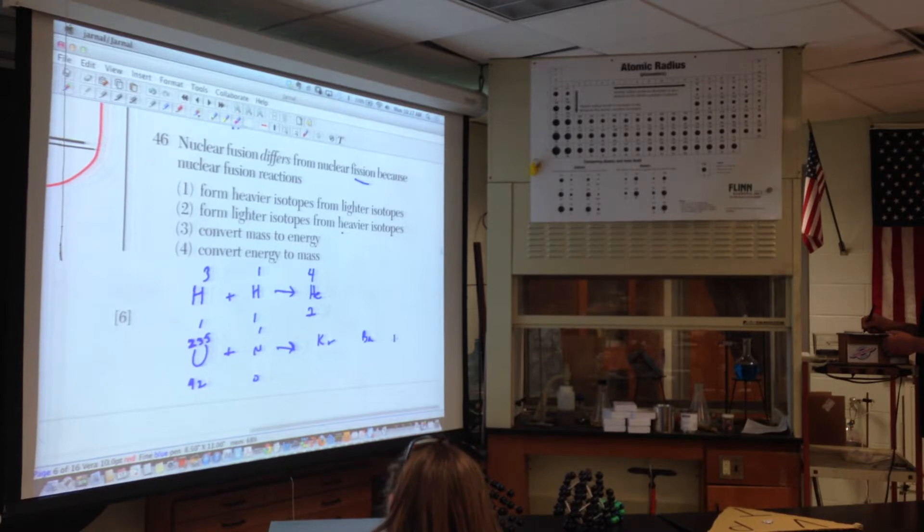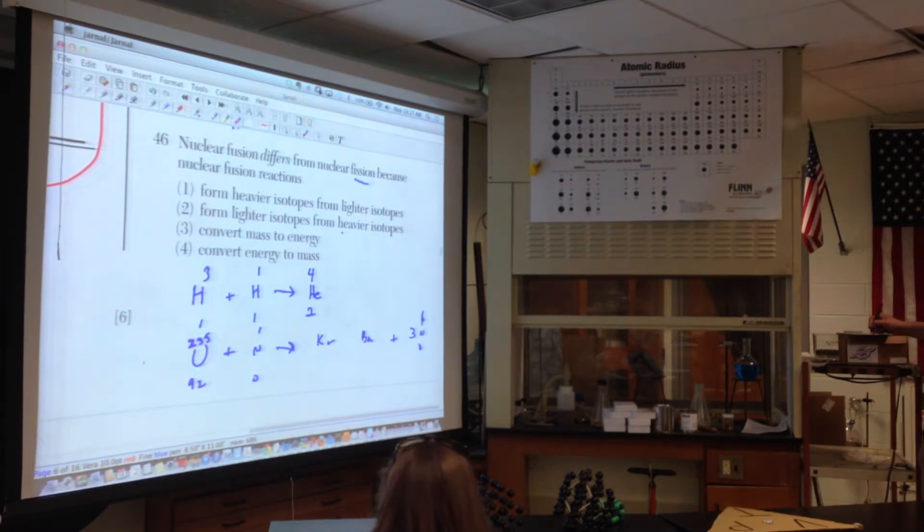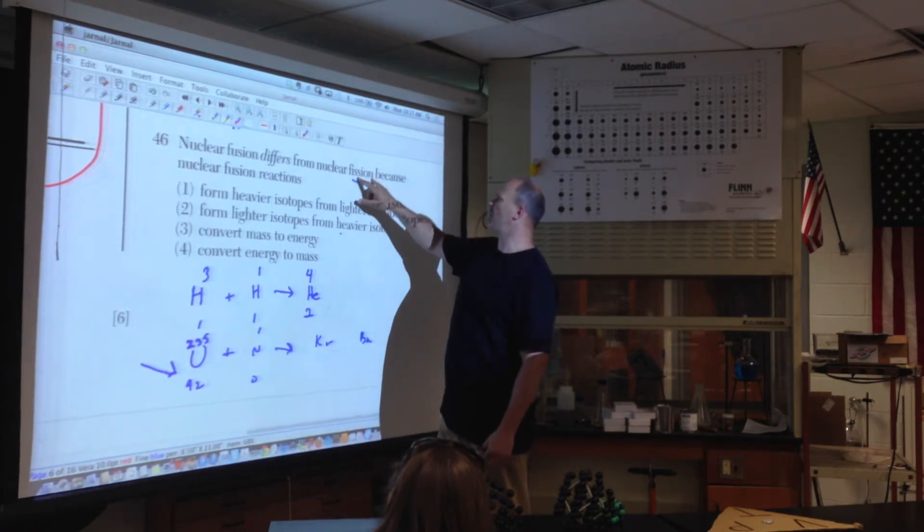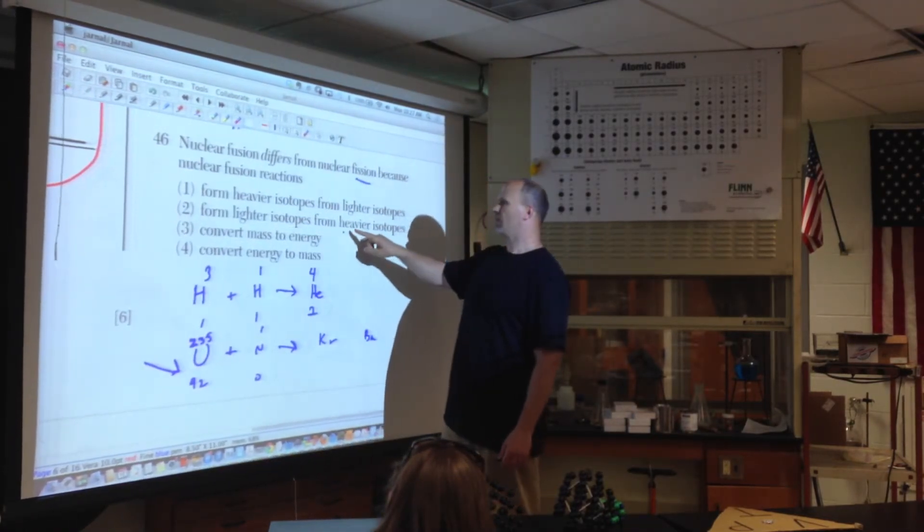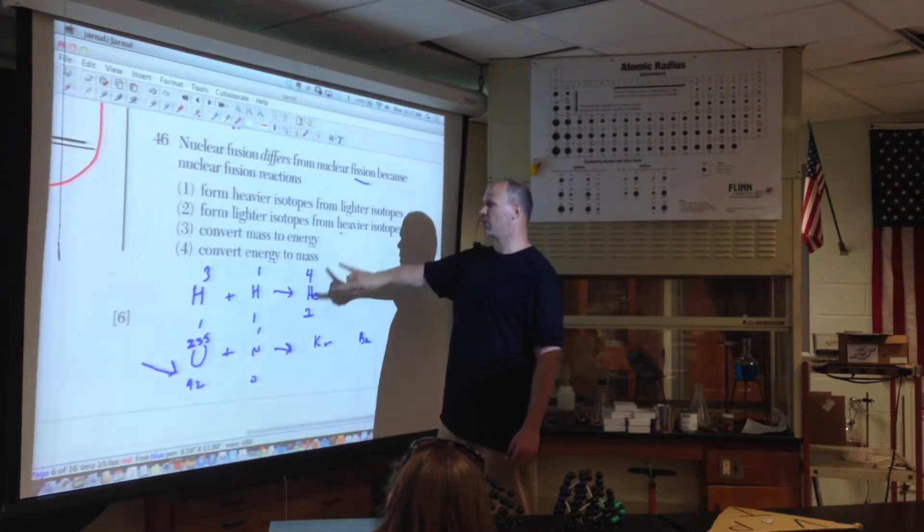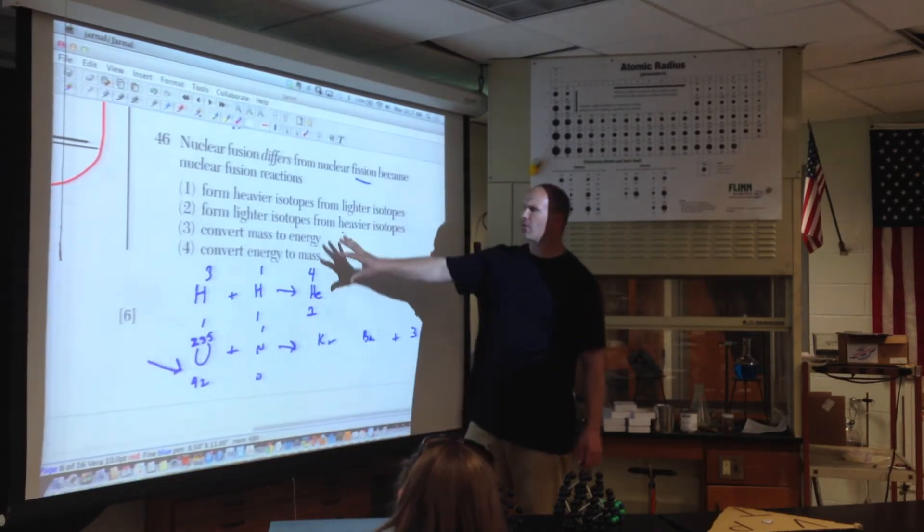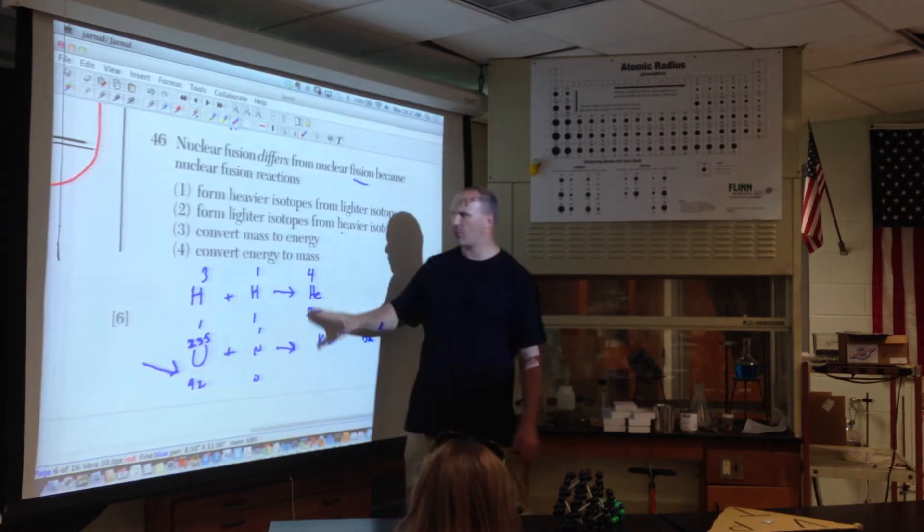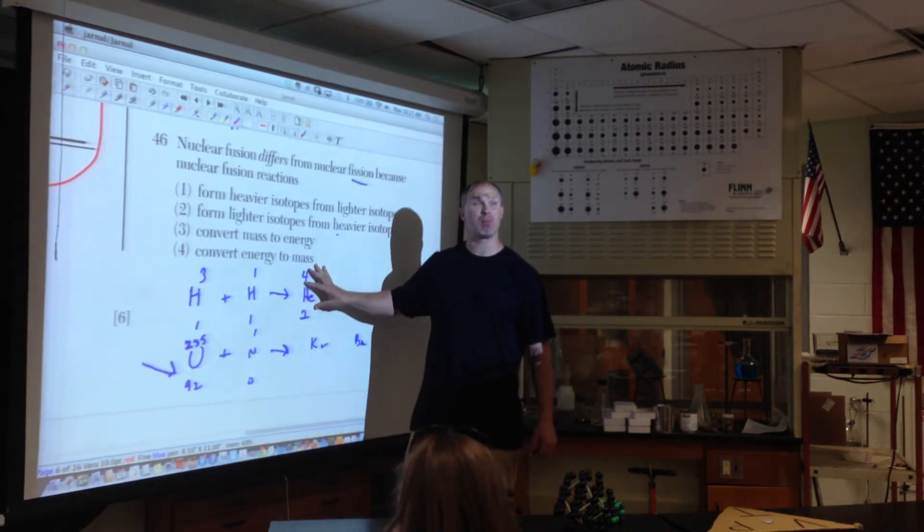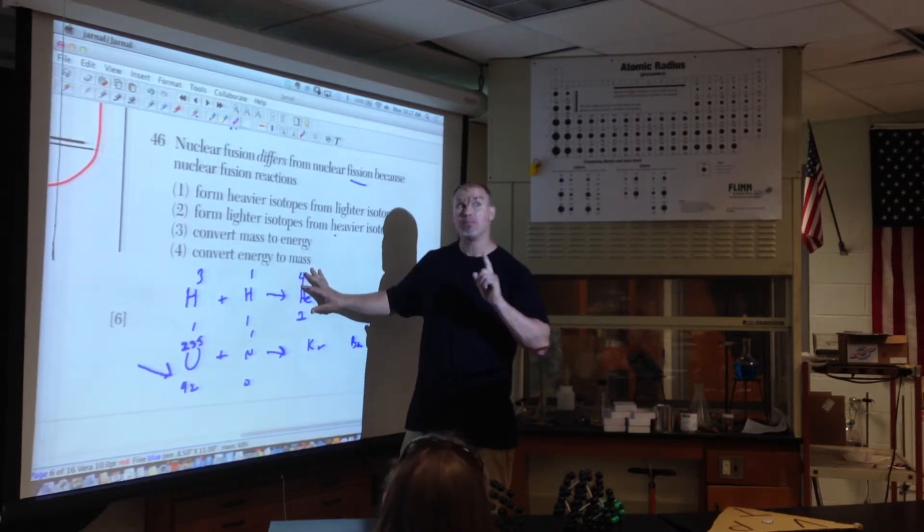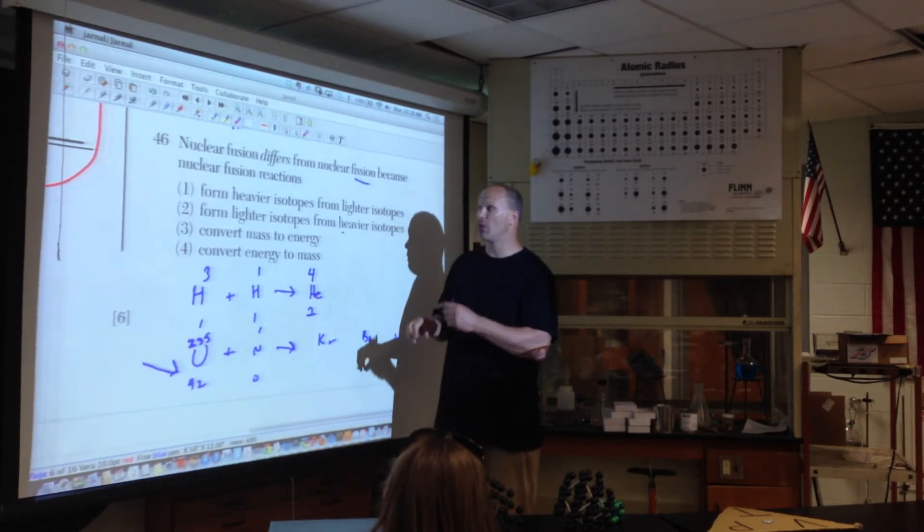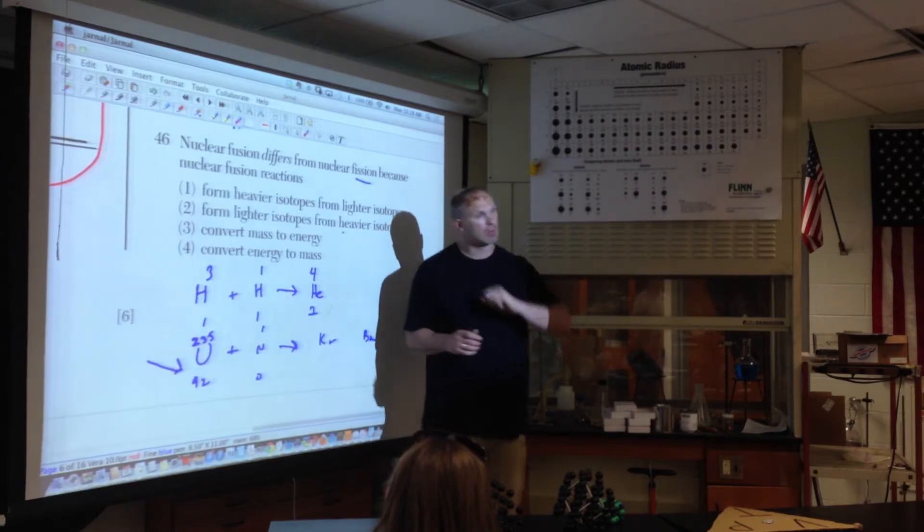Fission is like uranium-92, 235 plus a neutron splits into, let's say, krypton and barium. I don't know specifics and then three more neutrons. This is splitting the atom. Okay? But you're doing so with a very large nuclei. Okay? So nuclear fusion, not fission, fusing together differs from fission because fusions form heavier isotopes from lighter ones. So they're getting a little bit heavier from lighter ones. Now this idea of converting mass to energy and energy to mass, be careful with this. Every single nuclear equation has something called mass defect. Anytime, whether it's fission or fusion, we mass up the reactants, we mass up the products, we're missing some mass in nuclear reactions, not chemical reactions, that missing mass has been converted to energy.